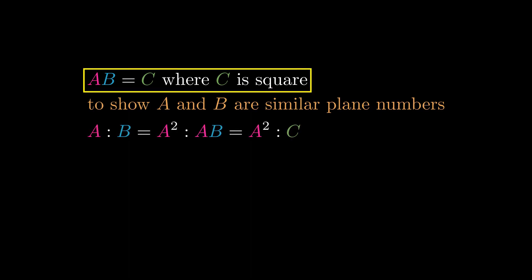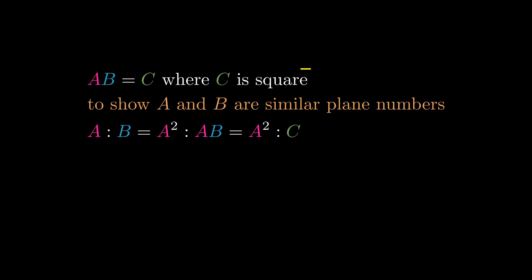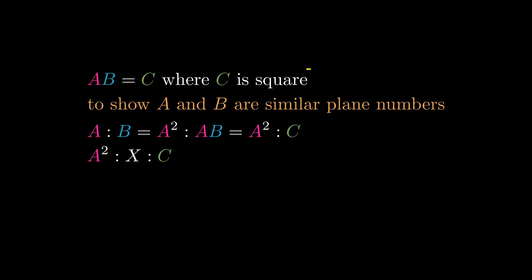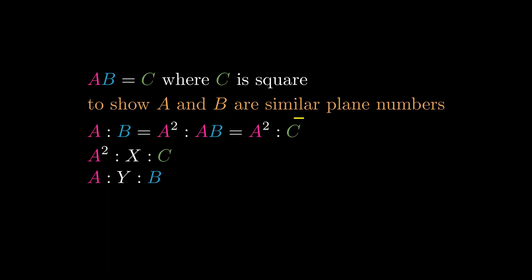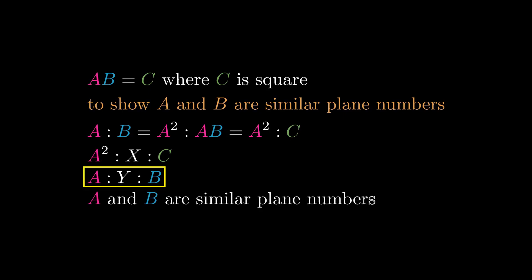a to b is proportional to a squared to c. a squared and c are both squares, so they are similar plane numbers, which means a squared and c have one mean proportional. a and b thus have one mean proportional, so a and b are similar plane numbers.